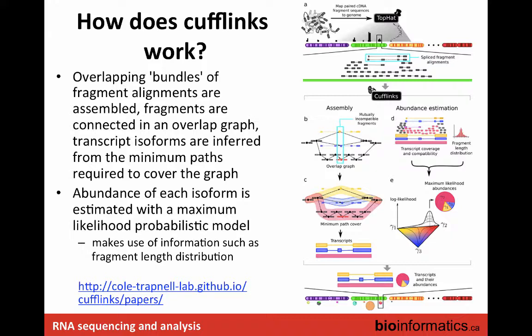That's one of the reasons we use Cufflinks. It produces convenient FPKM output, but it's much more sophisticated than the simple equation on the last slide. It does things like accounting for GC content and fragment size distribution of your library, and it tries to use that when inferring whether a particular read comes from one isoform versus another.